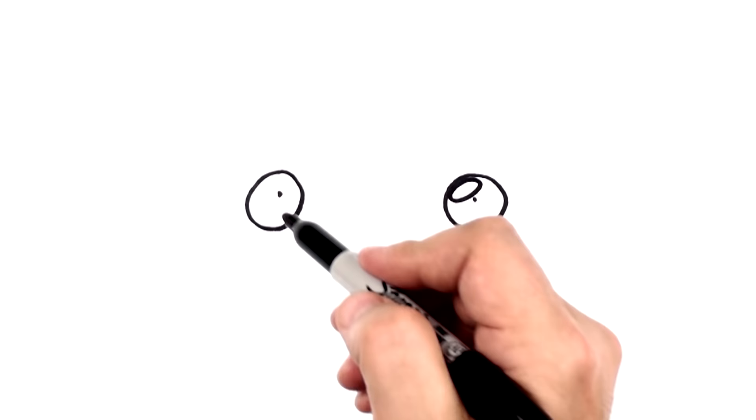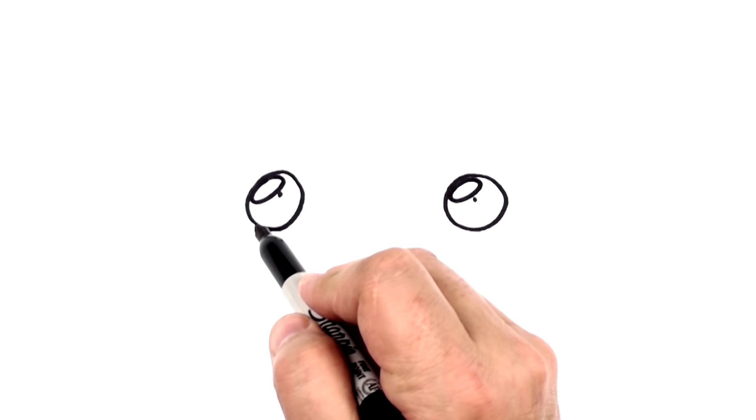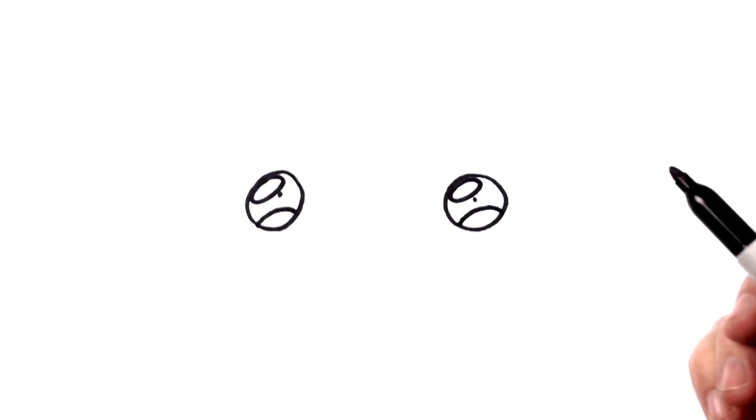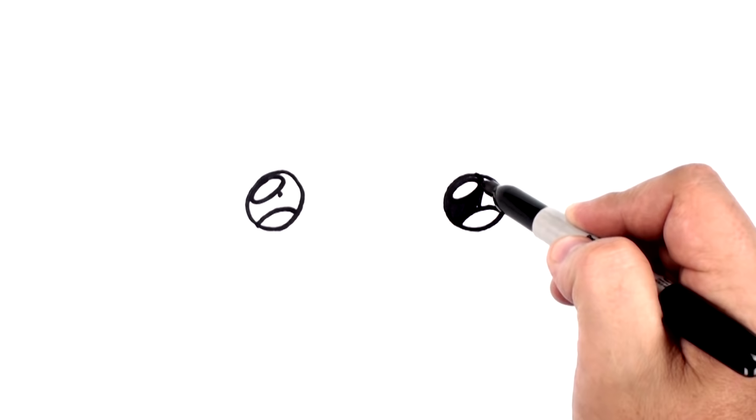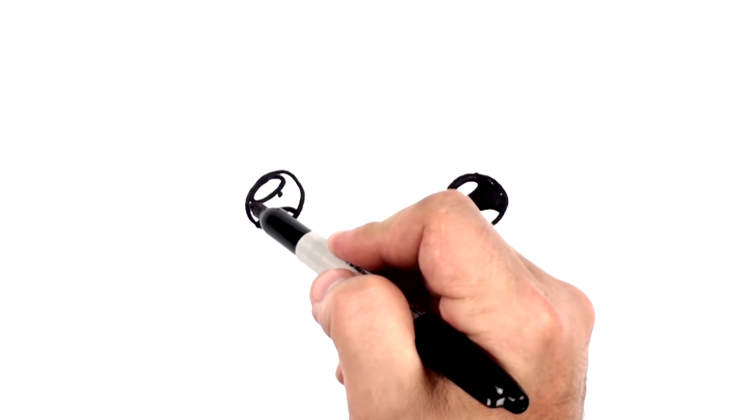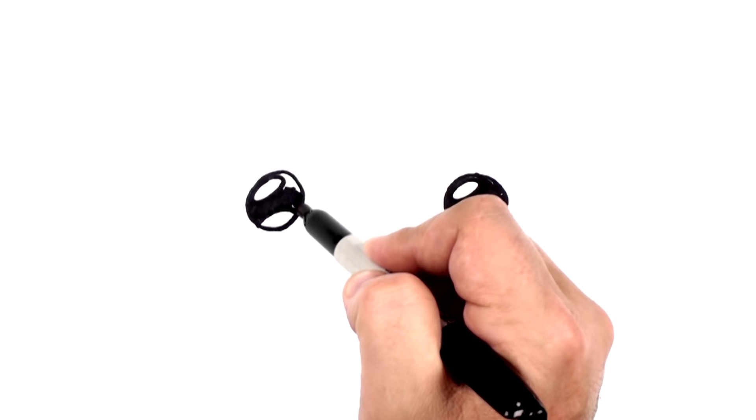Now we're going to draw a highlight here, and a highlight shape here. And we're going to do a curve right here at the bottom, and we're going to go ahead and shade this in.